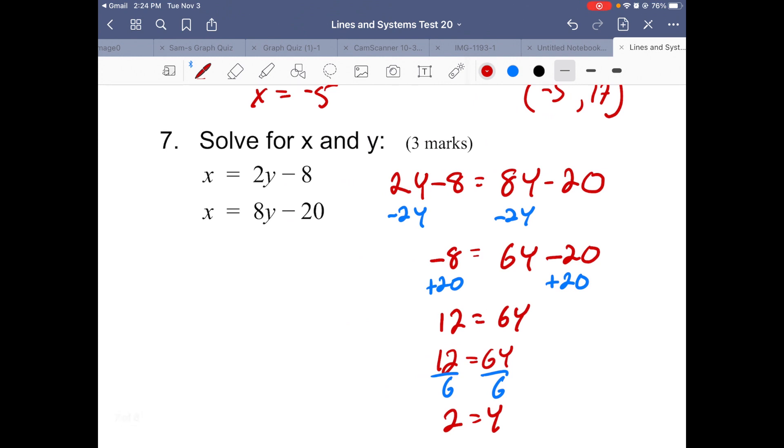I'm going to plug it into the first equation. We end up getting x = 2 times 2 minus 8, which is 4, take away 8, which is -4.